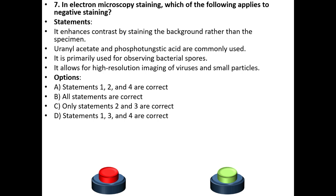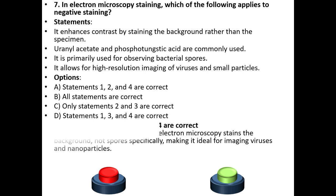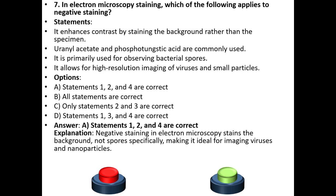Which among the following is correct? The answer is A: statements 1, 2, and 4 are correct. Explanation: Negative staining in electron microscopy stains the background, not spores specifically, making it ideal for imaging viruses and nanoparticles.